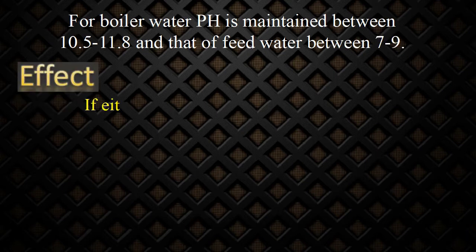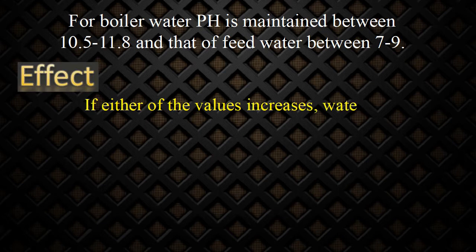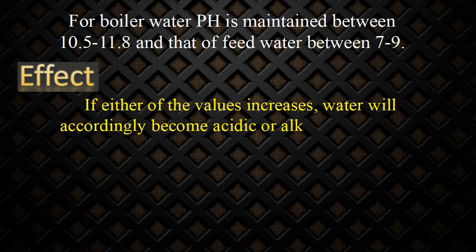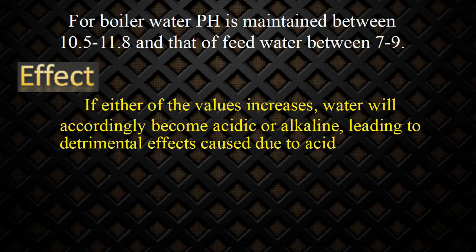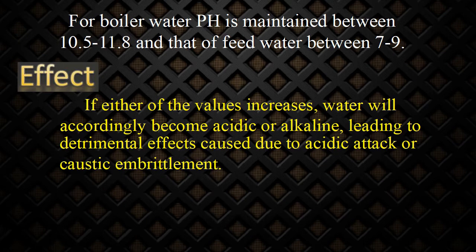If either of the pH values increases or decreases beyond the range, water will accordingly become acidic or alkaline, leading to detrimental effects caused due to acidic attack or caustic embrittlement, which may damage the boiler.